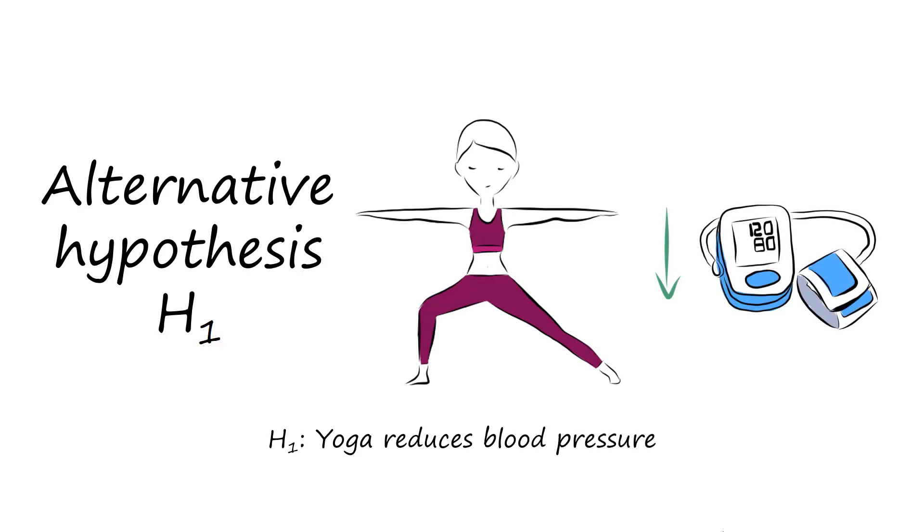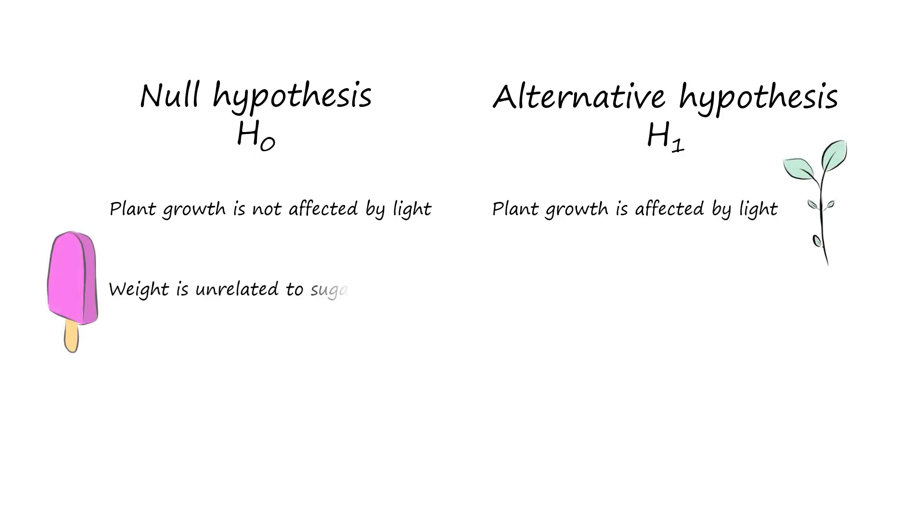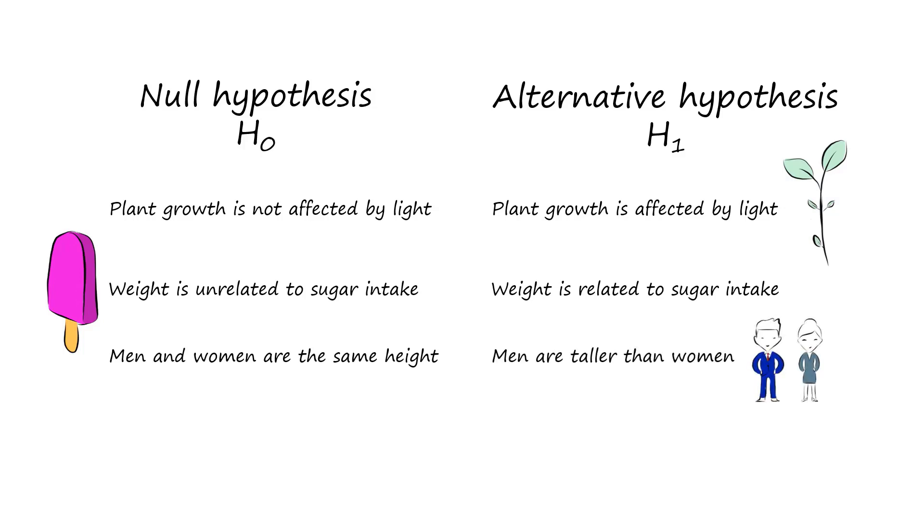Some more examples of null and alternative hypotheses include: Plant growth is not affected by light. Plant growth is affected by light. Weight is unrelated to sugar intake. Weight is related to sugar intake. Men and women are the same height. Men are taller than women. Coffee does not affect sleep. Coffee reduces sleep.